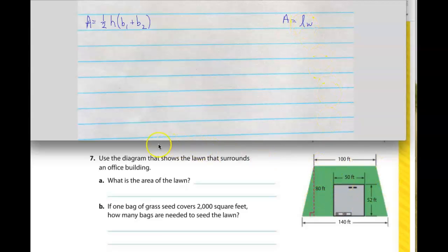Because if you look at this picture, it says use the diagram that shows the lawn that surrounds an office building. What's the area of the lawn? So this part here is not lawn, it's an office building. So the lawn is all the green bits.